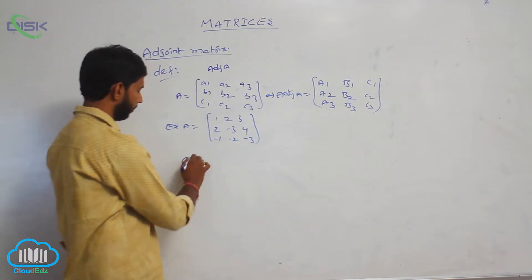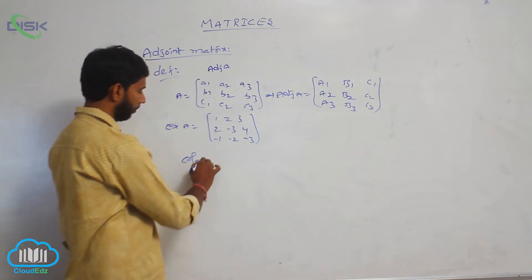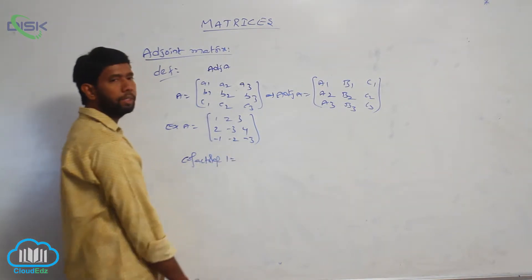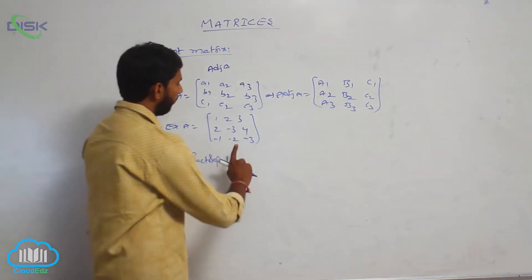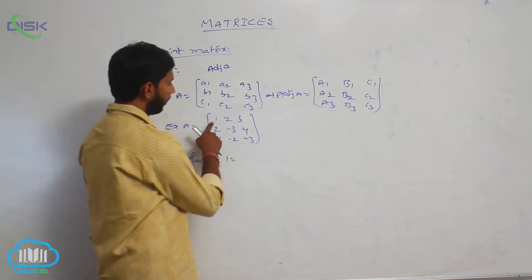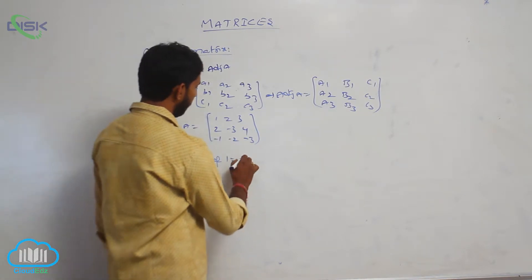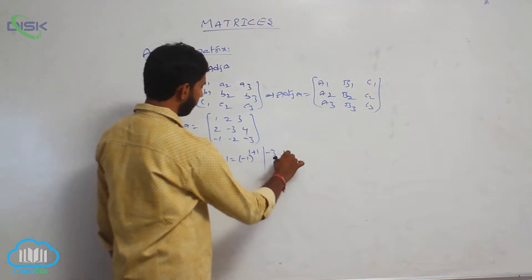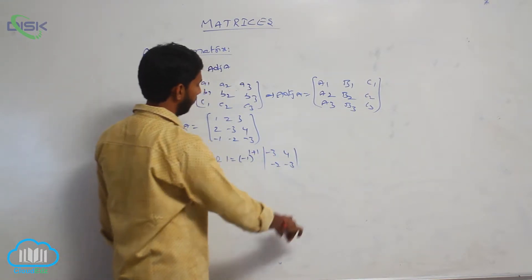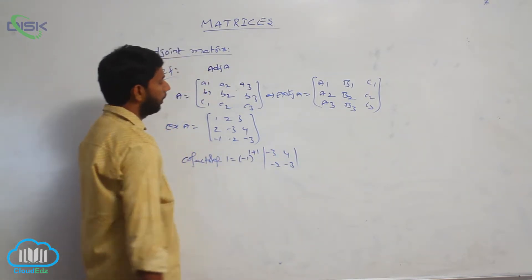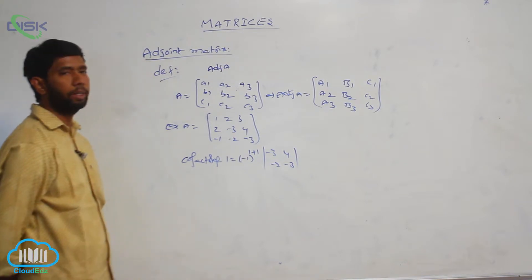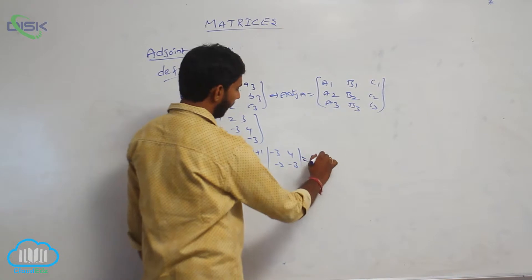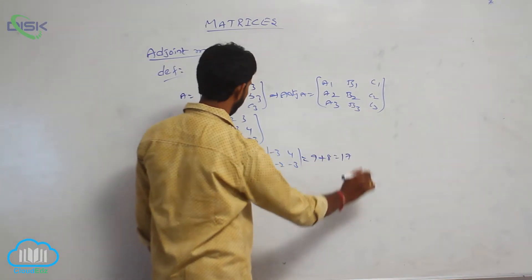Find the cofactors. Cofactor of 1 is equal to: eliminate the first row and first column, that is minus 1 to the power 1 plus 1 of the determinant of [minus 3, 4; minus 2, minus 3]. The determinant equals 9 plus 8, which is equal to 17.